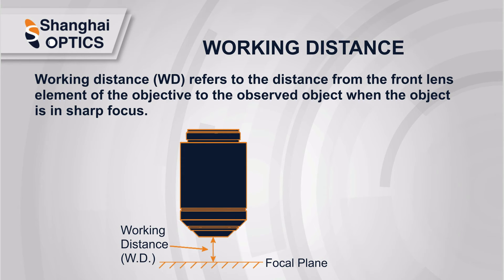Usually, the working distance refers to the distance from the front lens element of the objective to the observed object when the object is in sharp focus. Objective lenses with a long working distance are needed for many scientific research applications, such as atom trapping and analyzing fluid samples that require putting an object in a chamber. The resolution of a microscopy system can be significantly affected if the observed object is not placed on the design object plane, especially for an objective with high numerical aperture.